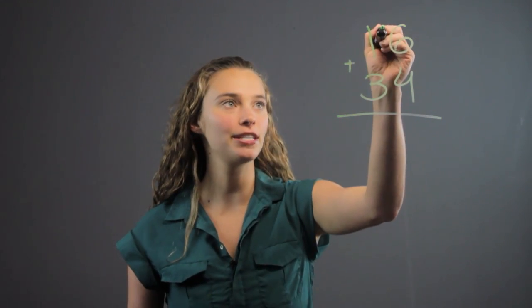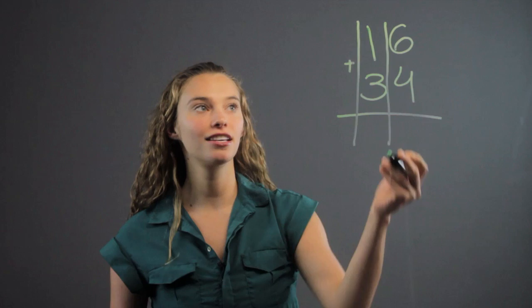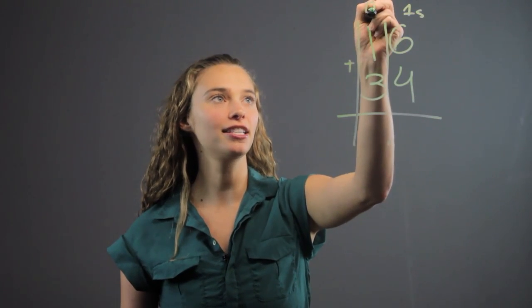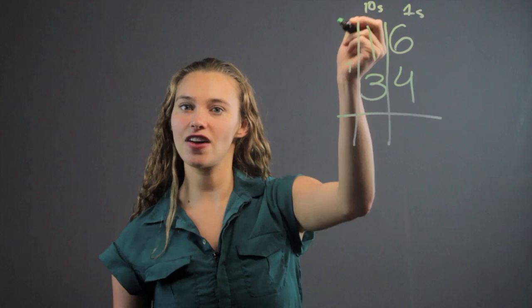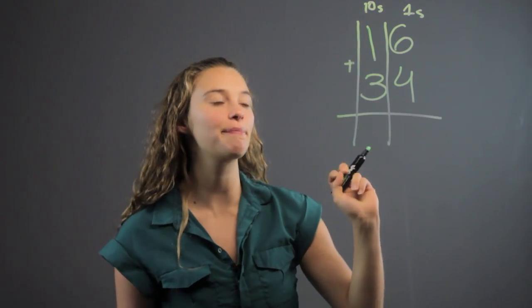But with partial sums we do something different. We separate with lines, the ones place, the tens place, and maybe you're going to have a hundreds place if you have a three-digit number, but here we're just dealing with the tens and the ones. Very simple.